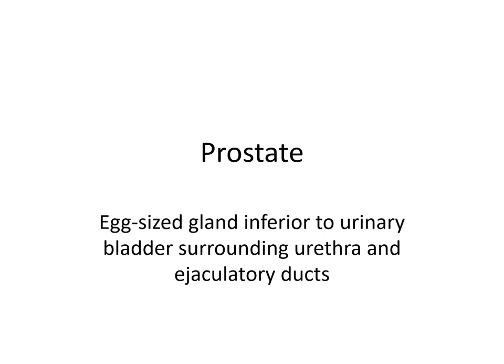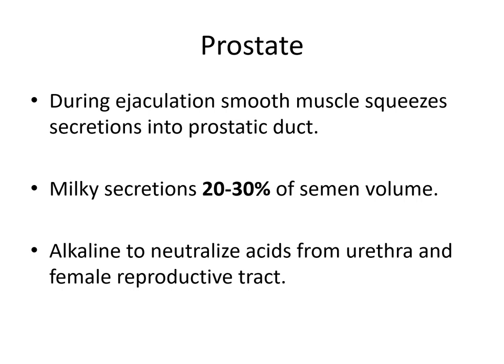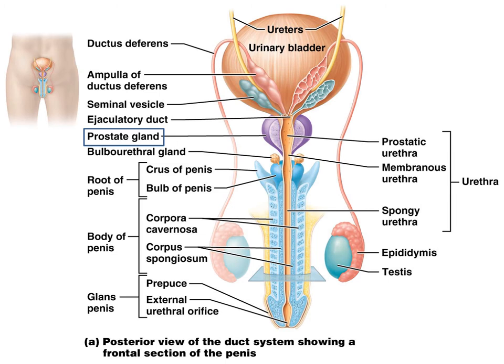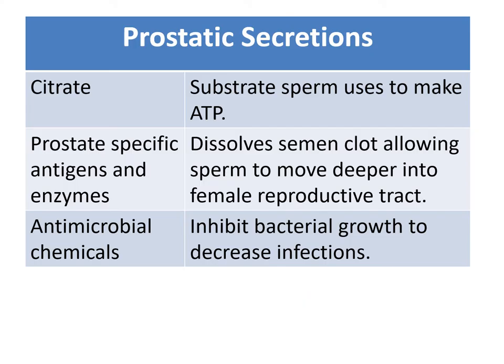The prostate gland is an accessory gland inferior to the urinary bladder surrounding the urethra and the ejaculatory ducts. During ejaculation, smooth muscle squeezes secretions into the prostatic duct, and milky secretions produce about 20 to 30% of the semen volume. The prostatic secretions are alkaline to help neutralize acids from the urethra and also to counteract the acids in the female reproductive tract. Here's the prostate gland with the prostatic urethra passing through it. The composition of prostatic secretion contains citrate, a substrate sperm uses to make ATP; prostatic specific antigen enzymes, which help dissolve the semen clot, allowing sperm to move deeper into the female reproductive tract; and antimicrobial chemicals, which inhibit bacterial growth to decrease infection.